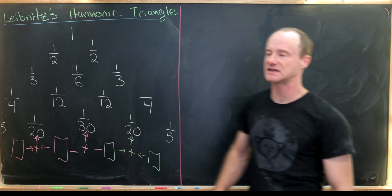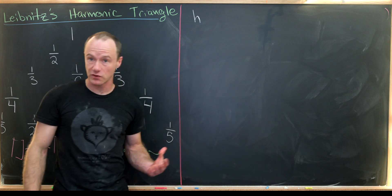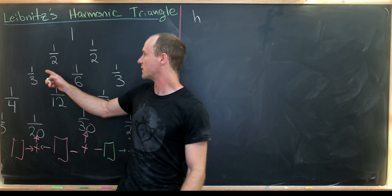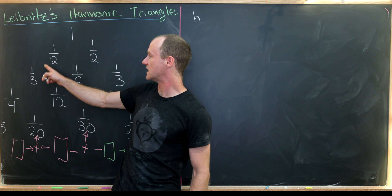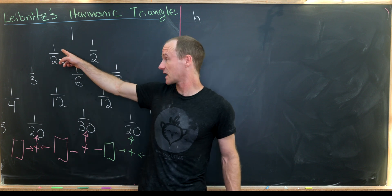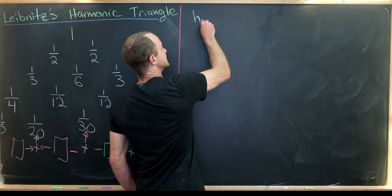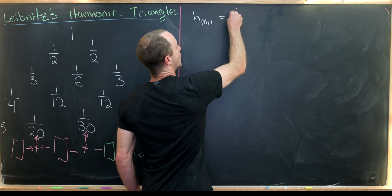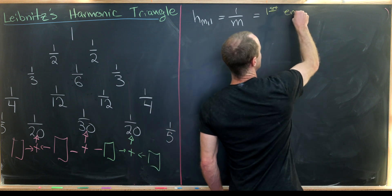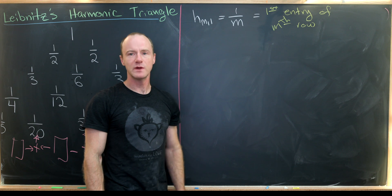Let's put this together into a formal rule. The first entry of every row must be a reciprocal of a natural number. So if we're in the m-th row, the first entry h(m,1) is one over m. The first entry of row one is one, of row two is one-half, of row three is one-third, and so on.